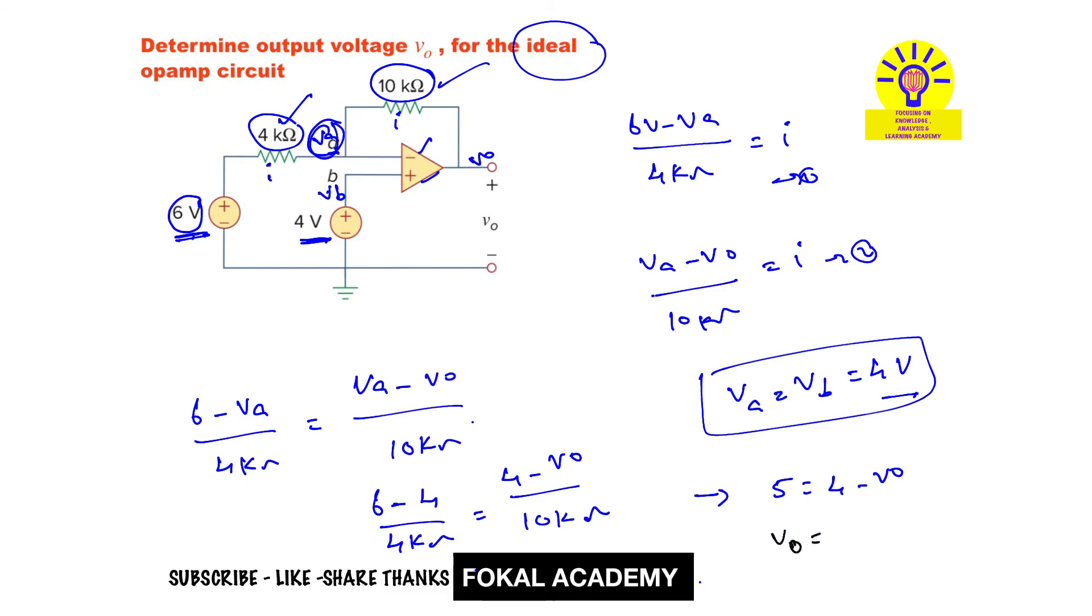Therefore, output voltage v0 equals minus 1 volt. For the given circuit, output voltage is minus 1 volt.